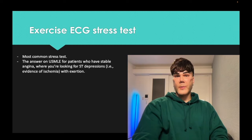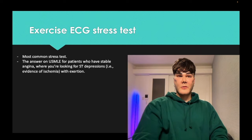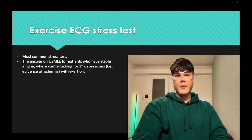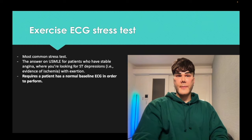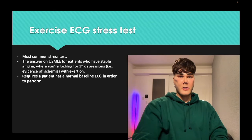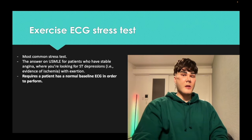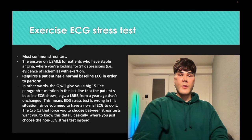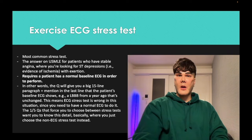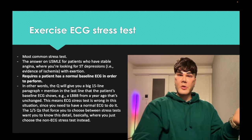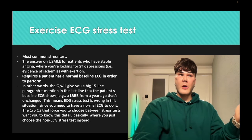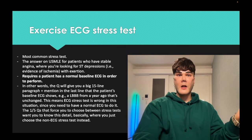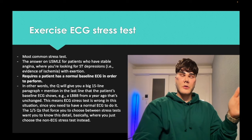ECG exercise stress test is the bread-and-butter standard stress test. If a patient has chest pain with exertion and stable angina, get them on a treadmill and look for ST depressions — ischemia with exertion. It requires the patient to have a normal baseline ECG — you cannot have atrial fibrillation or a left bundle branch block. If they list any type of ECG abnormality, you know the ECG stress test is wrong. It's not LBBB specifically — it's any ECG change that rules it out.